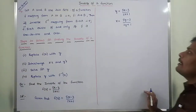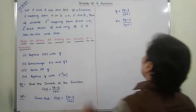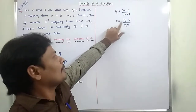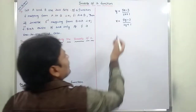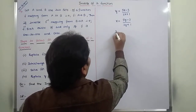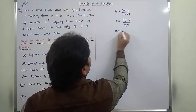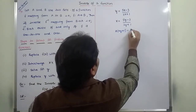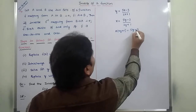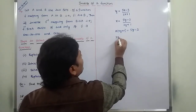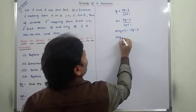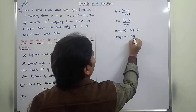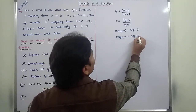Third step: solve for y. Now we have to find out the y value from this equation. So therefore, x multiplied with 2y plus 1 is equal to 5y minus 3. So then 2xy plus x is equal to 5y minus 3.